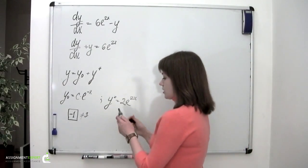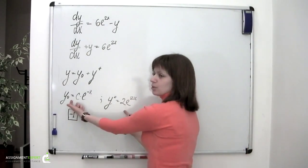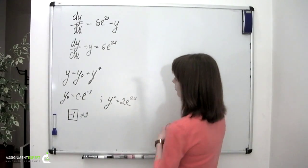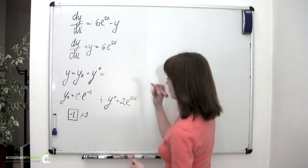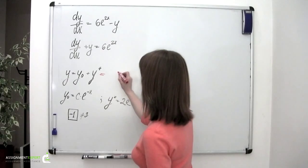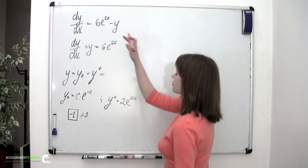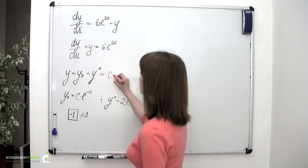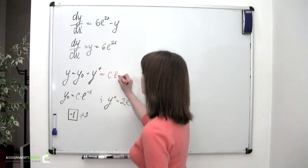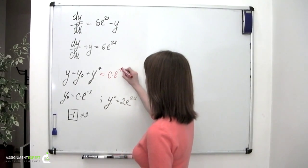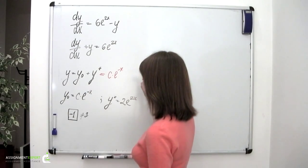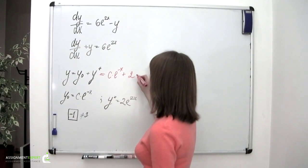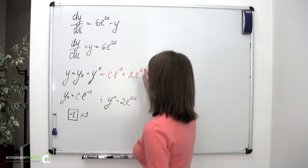So our last step is to add these two solutions. The answer to our initial equation is y equals C times e to the power of negative x, plus 2 times e to the power of 2x.